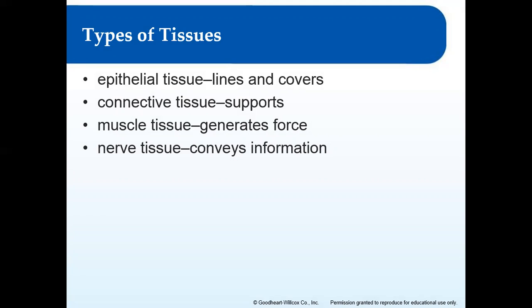Muscle tissue generates force. There are three types of muscle tissue we'll talk about, but skeletal muscle we'll cover more specifically in the muscle chapter later this semester. Nervous tissue conveys information — think neurons stimulated by electrical pulses. We'll touch on nervous tissue briefly here, but we have a whole chapter on the nervous system that covers that in more depth.